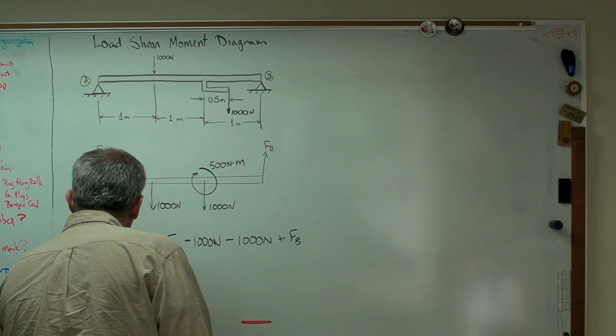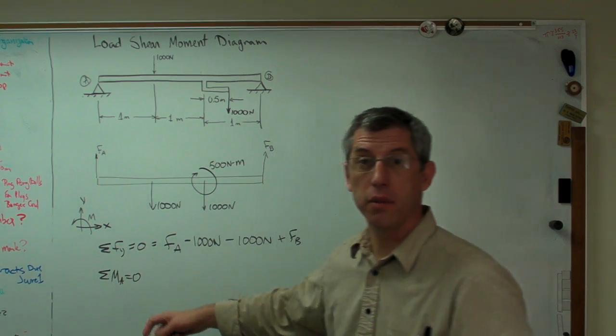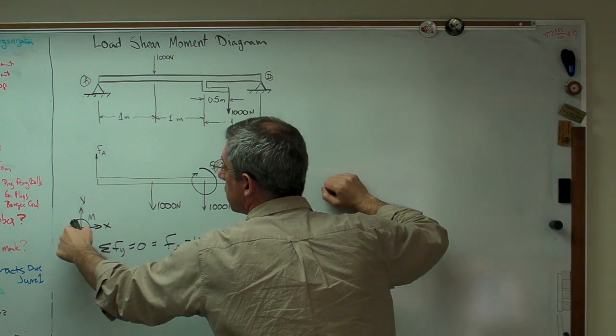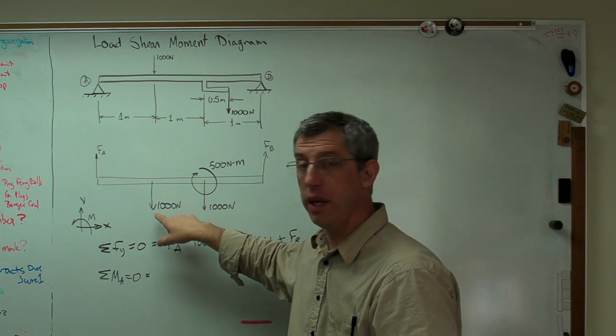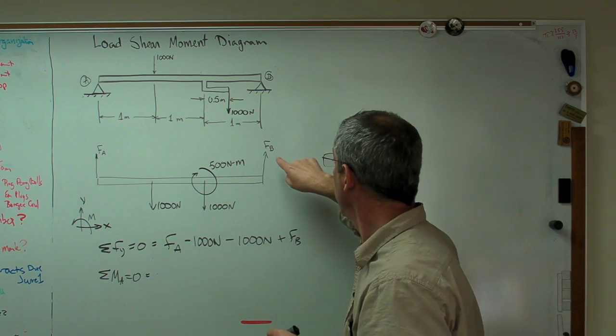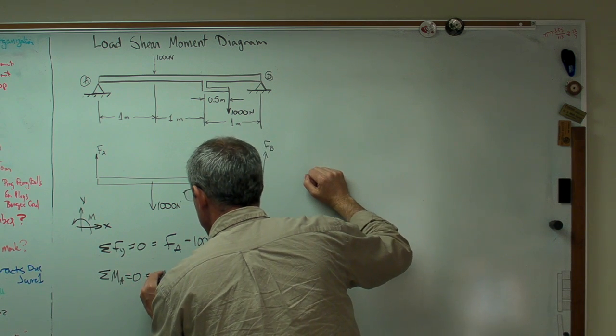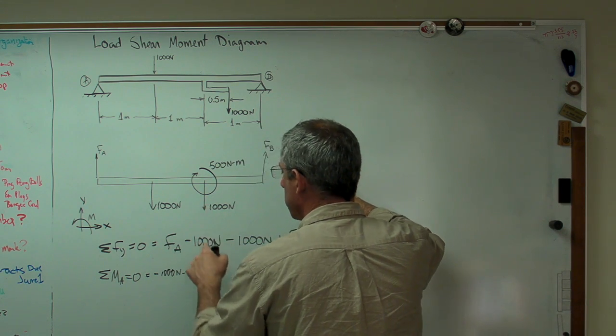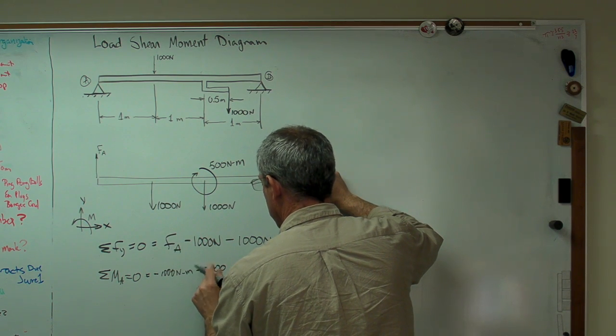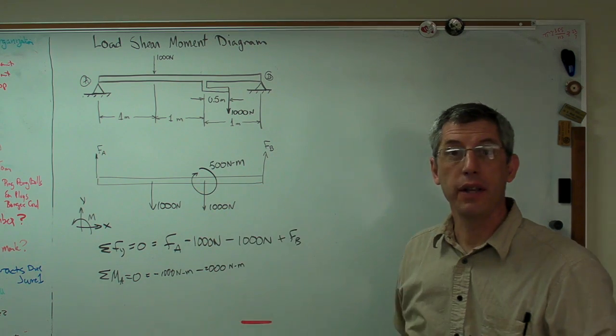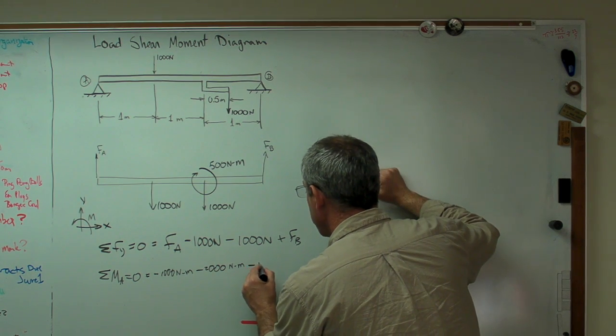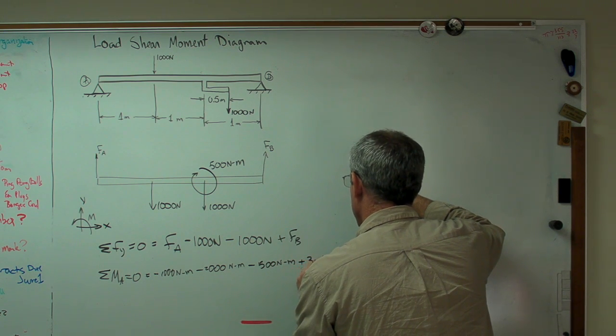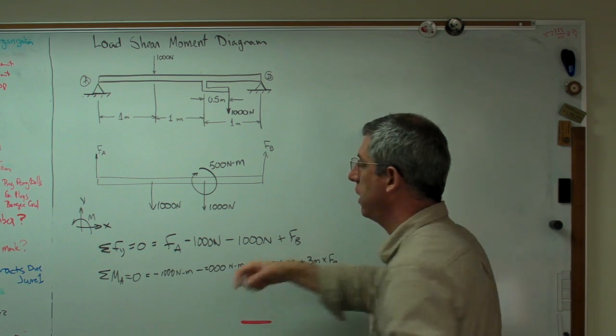How about if we sum the moments about some point? If I sum the moments about A, only FB will be unknown. So I'll have one equation and one unknown, and then I can substitute into here. If I write, sum of the moments about A equals 0, this is trying to go clockwise. My positive sign convention is counterclockwise. So minus 1,000 newton meters for that one, minus another 1,000 newtons times 2 meters for that force right there. And this is just a pure moment, so I just add that in. So in this case, it's negative. And then plus 3 meters times FB, and that all equals 0.